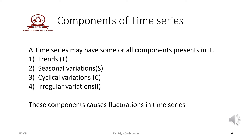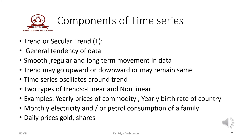Let us see the components one by one in detail. The first component of time series is trend, also called secular trend. It is a general tendency of the data observed in the given interval of time. Trends are always smooth, regular, and have long-term movement in the data. Trends may go upward or downward or remain the same, meaning the value of the variable may increase, decrease, or remain constant. Time series generally oscillates around the trend.